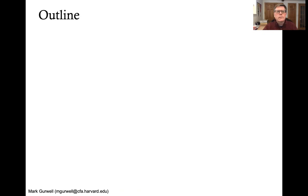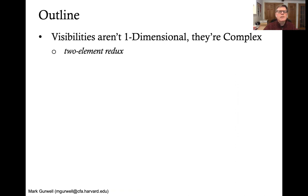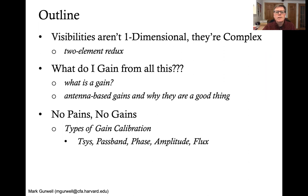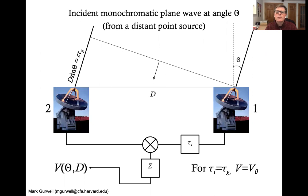Here's a little bit of outline what we're going to cover. We're going to talk about visibilities, what they are, what they mean. You've heard a lot about this already in a few other talks, but we'll just do a quick synopsis of that. And we'll talk about what gains are, what they mean in terms of calibration, why they're a good thing, and the types of calibration that you need to go through to calibrate the data, particularly an SMA dataset.